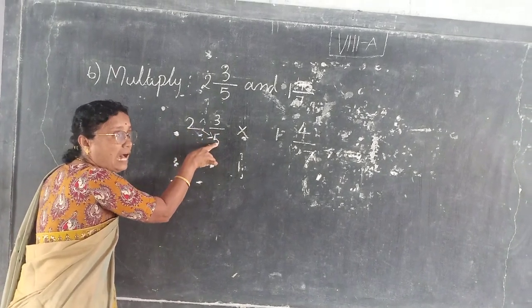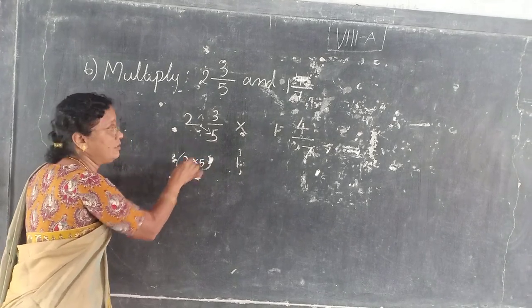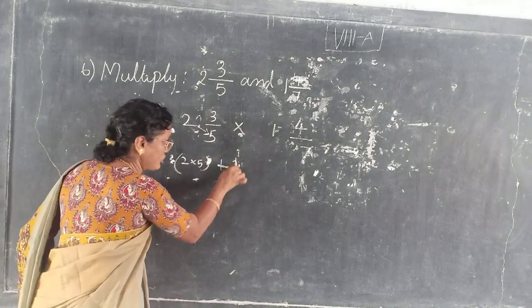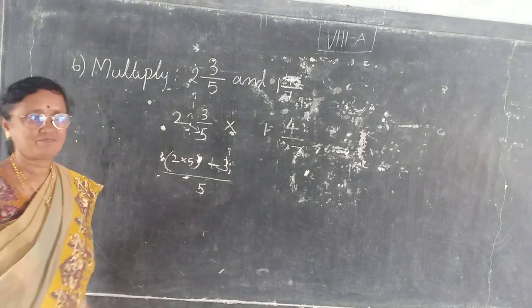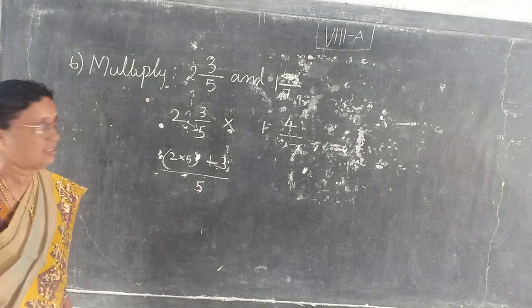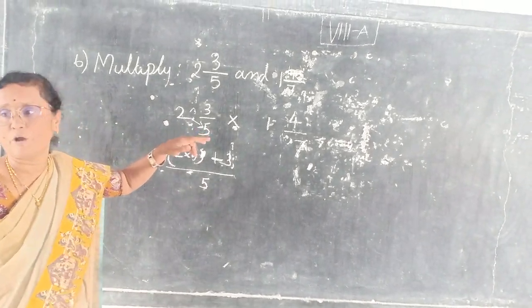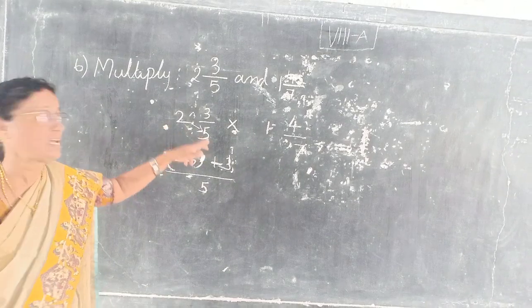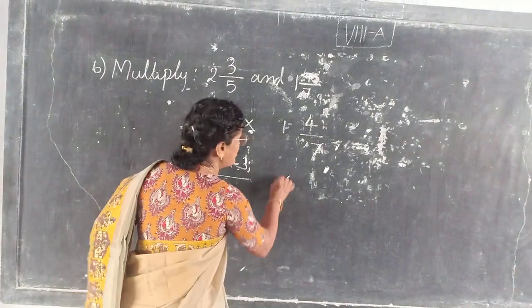2, 5's are 10. So 2 into 5 plus 3 divided by 5. Do you follow? Actually, mentally you can do the problem. 2, 5's are 10. 10 plus 3, 13. So 13 by 5.